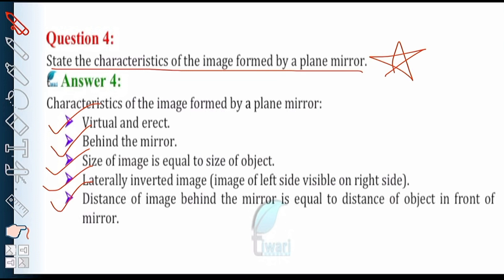Second: the image is formed behind the mirror. Third: the size of the image is equal to the size of the object — this is a very important characteristic. Fourth: the image is laterally inverted, meaning the left side of the object appears on the right side in the image, and the right side appears on the left. For example, if you raise your left hand, the image appears to raise its right hand. Fifth: the distance of the image behind the mirror is equal to the distance of the object in front of the mirror.